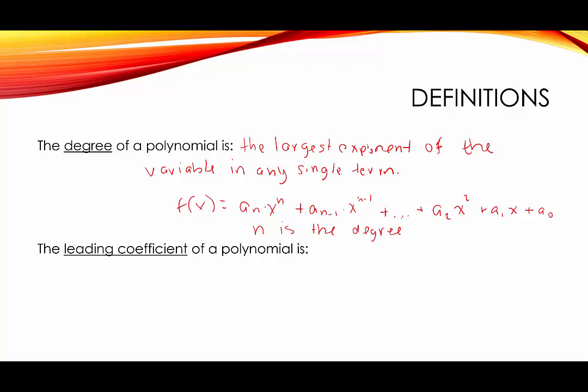Sometimes when we're given polynomial functions they're not written in standard form — you might want to rewrite them if they are separate terms. But also polynomials can be written in factored form. For example, we can write a_n times x^q times (x − r) times (x − s).